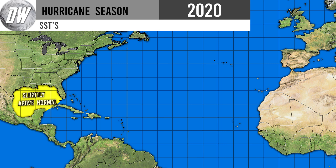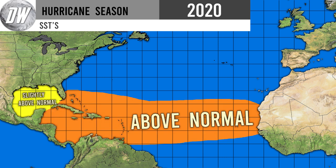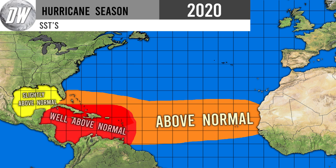If we do see above normal sea surface temperatures in the Gulf, that's only going to help more development occur. Here is our above normal sea surface temperature region, which takes up our entire MDR and also the Caribbean. We also have a third layer — our well above normal region — dealing with sea surface temperatures far above what is normal for this time of year.